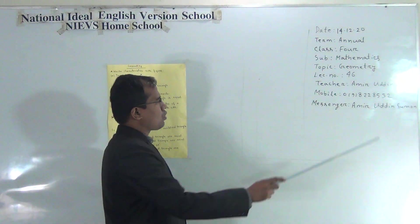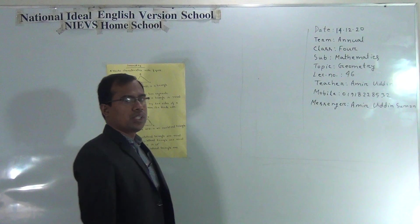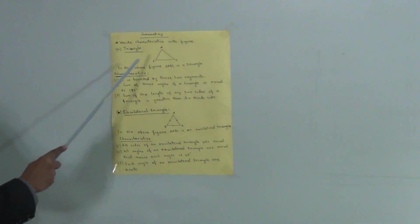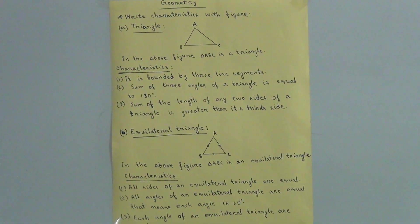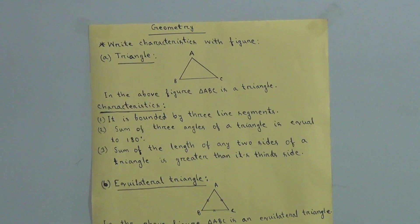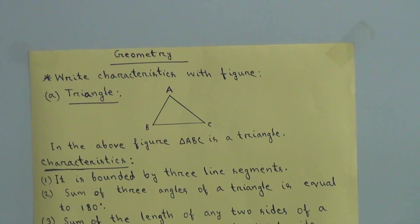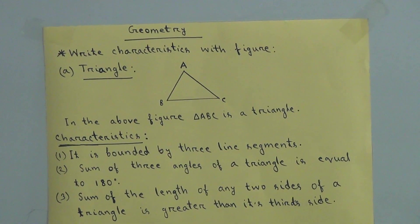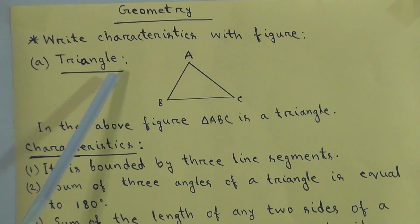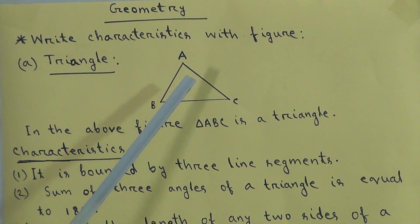Our today's topic is geometry. This is lesson number 46. In this class our topic is the characteristics of right figures. We will draw figures of a triangle and an equilateral triangle, then we will write the characteristics of each.